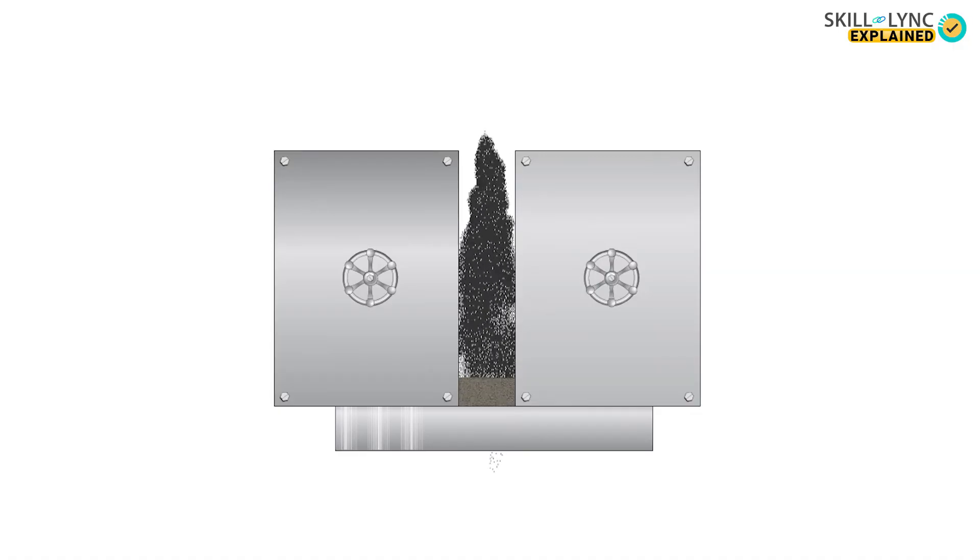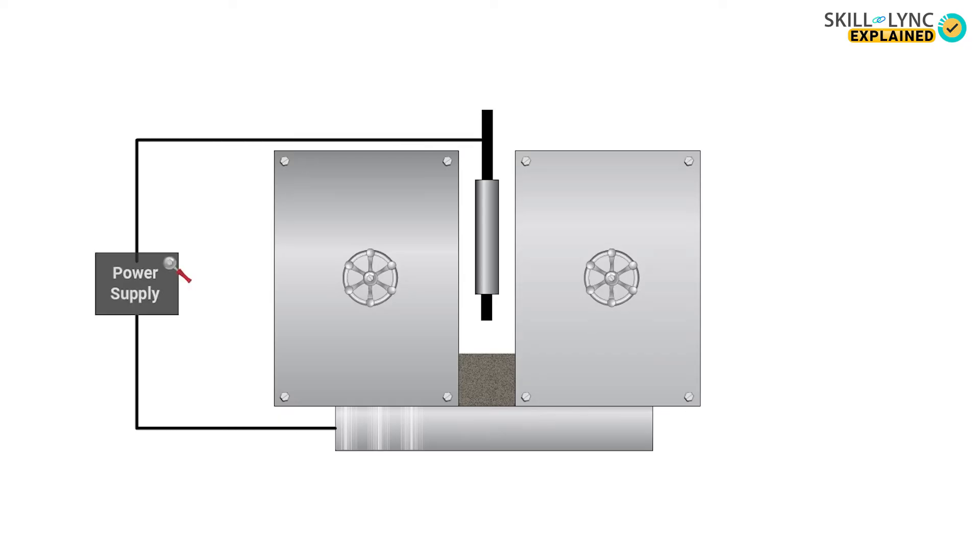A flux material is then added into the gap. After this, the electrode is lowered into this gap. One end of the power terminal is connected to the electrode and another end is clamped to the base metal.